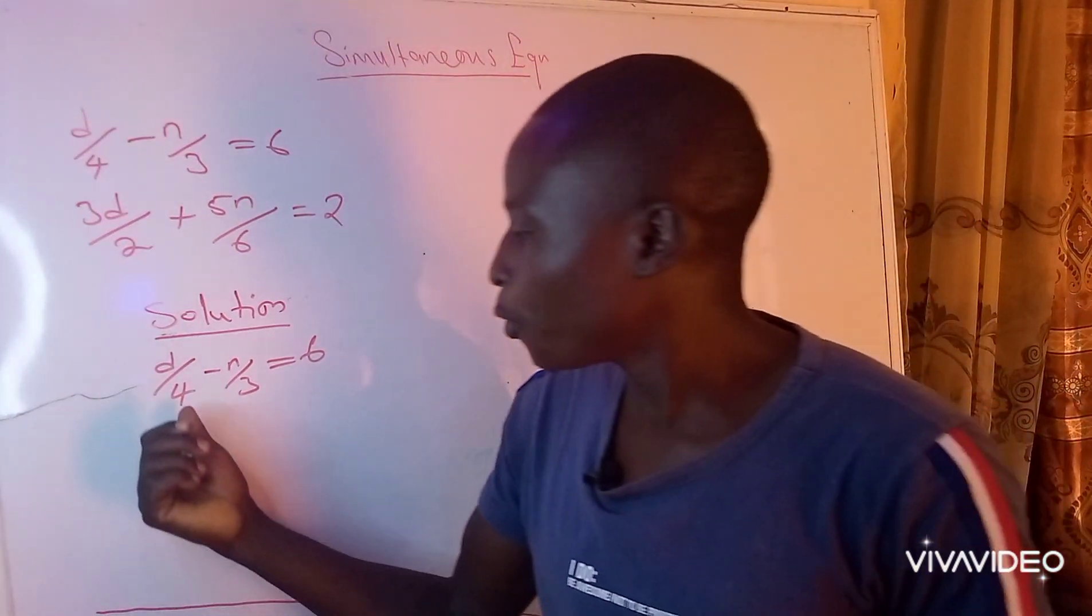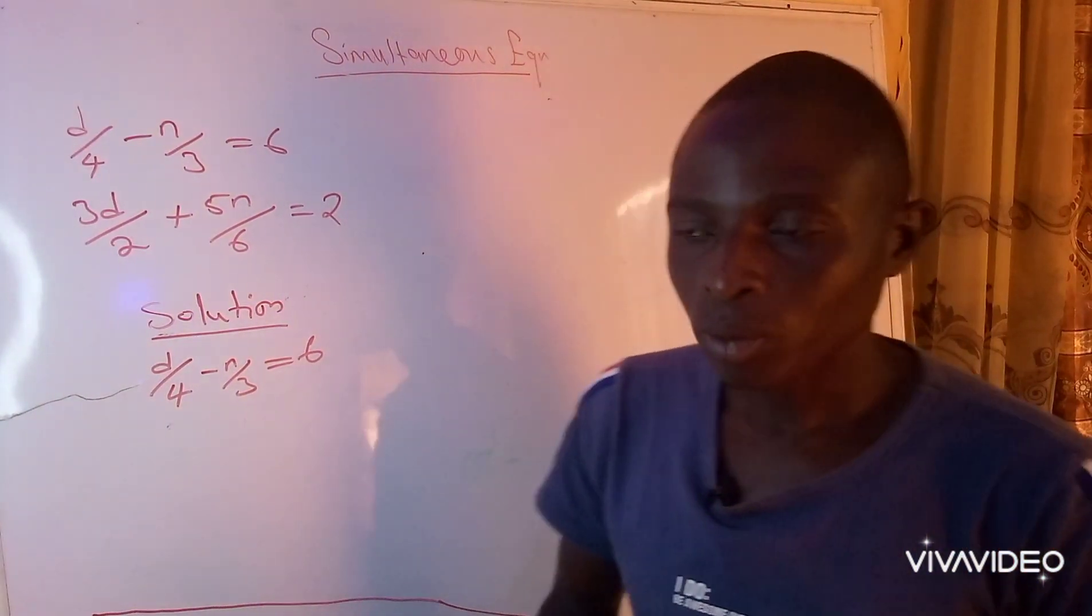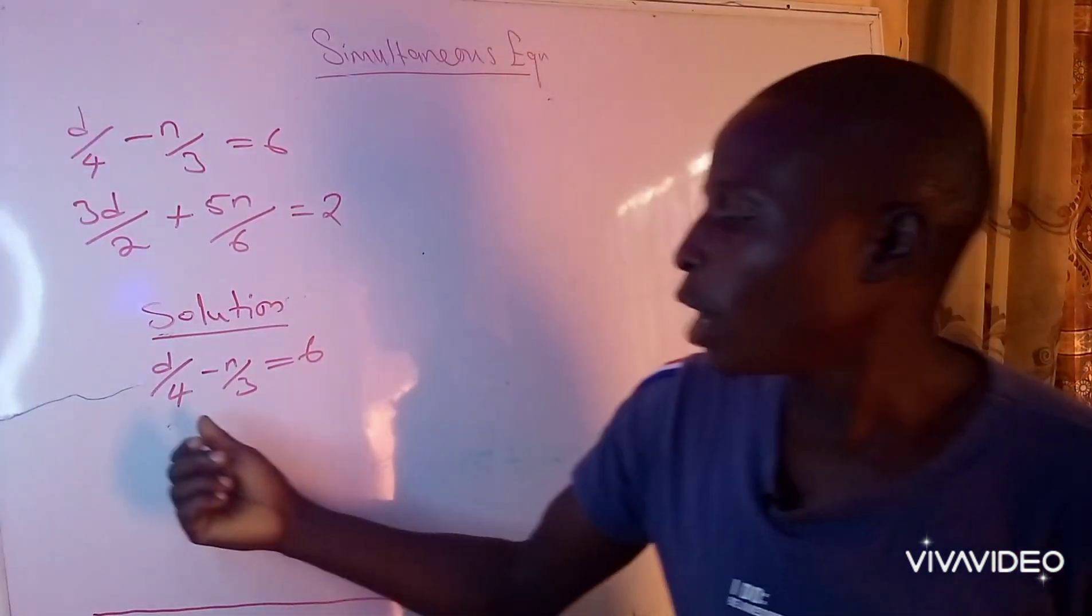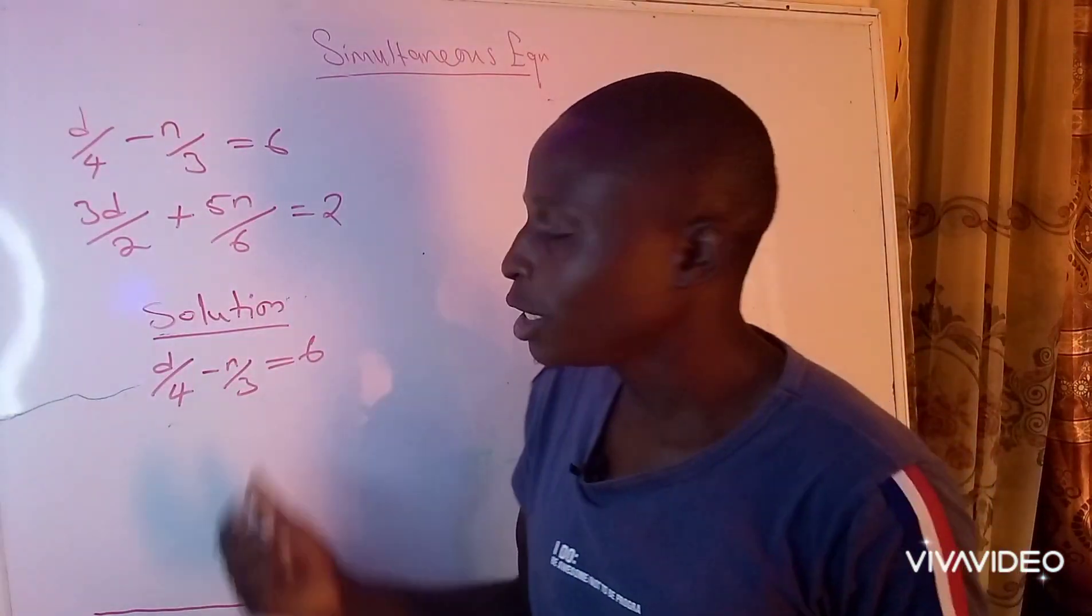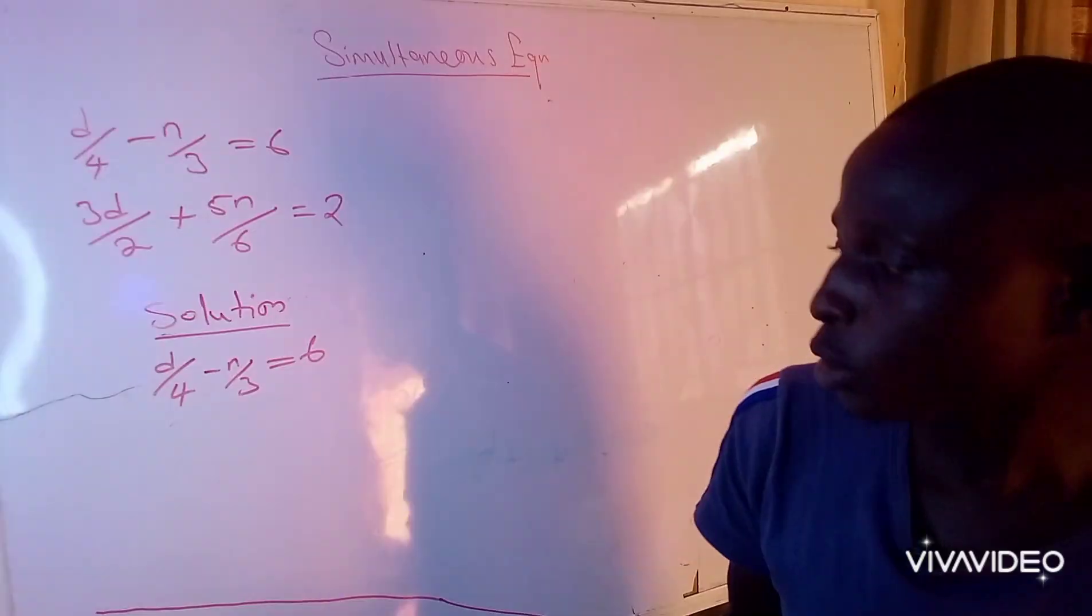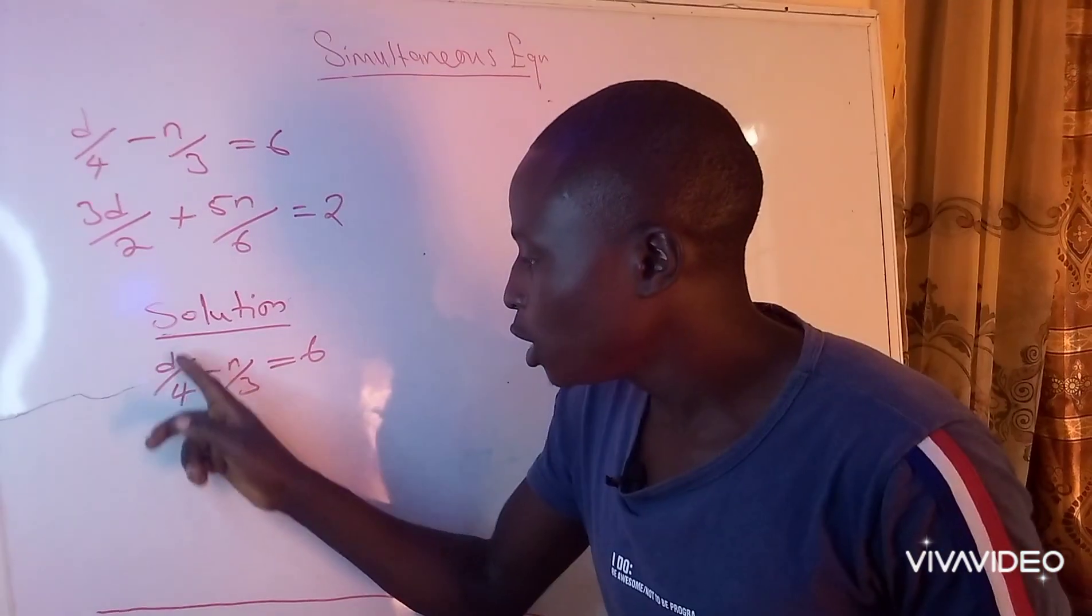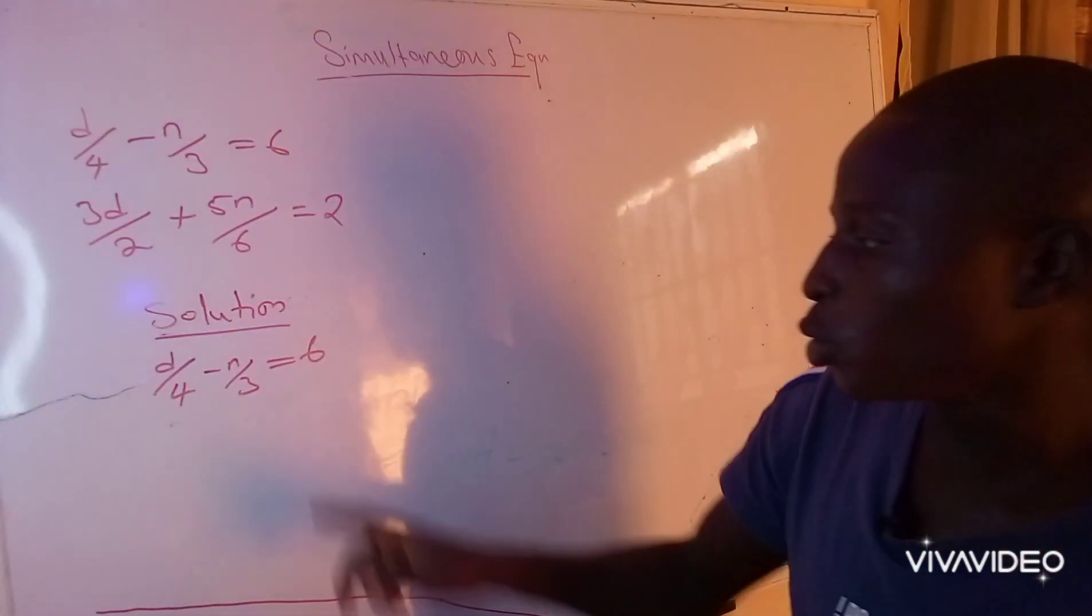The reason why I said we have to look for the LCM of 4 and 3 is because 4 and 3 are the denominators: d over 4, 4 is the denominator; n over 3, 3 is the denominator.